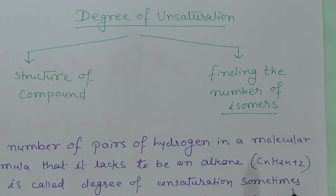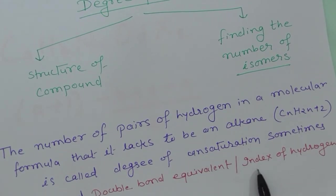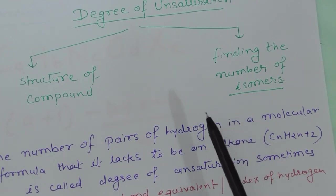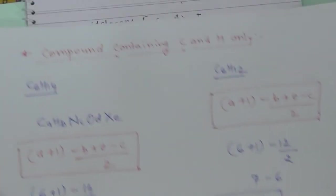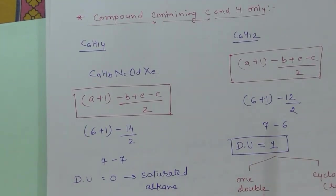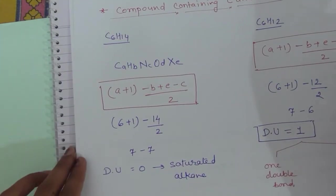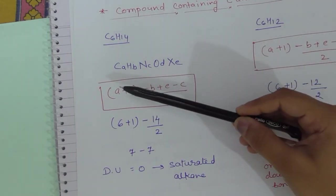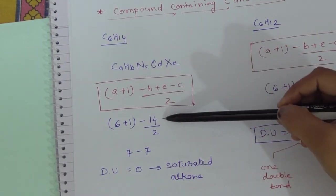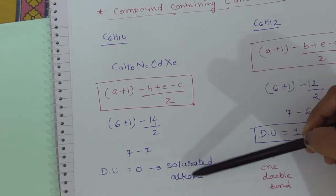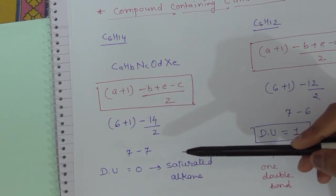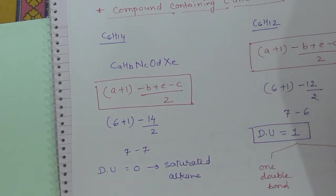The number of pairs of hydrogen removed compared to the corresponding alkane is called the degree of unsaturation, double bond equivalent, or index of hydrogen deficiency. For C6H14, applying the formula: 6 + 1 − 14/2 = 7 − 7 = 0. A degree of unsaturation of zero means the compound is a saturated alkane, with the general formula CnH2n+2.